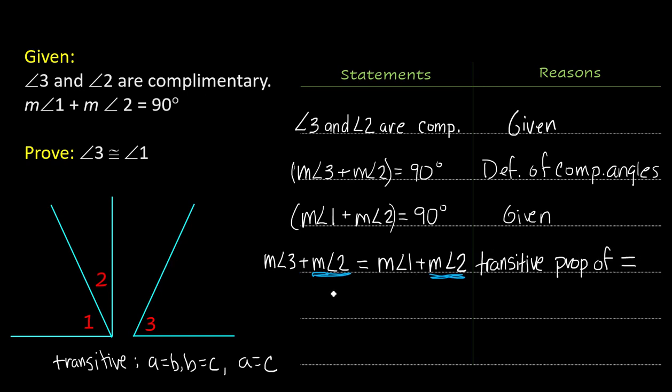Now we're going to just in our heads subtract angle 2 from both sides and we're at the measure of angle 3 equals the measure of angle 1. The reason we did that is the subtraction property of equality.